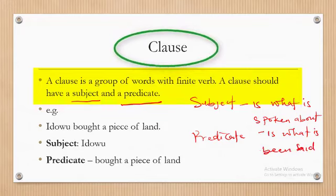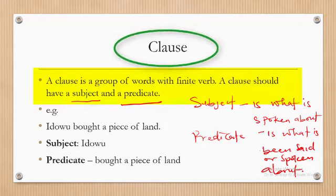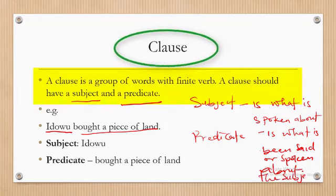A clause in English must contain both a subject and a predicate. For instance, in the sentence 'Idou bought a piece of land,' Idou is the subject — the one spoken about — and 'bought a piece of land' is the predicate, which is what is said about the subject.